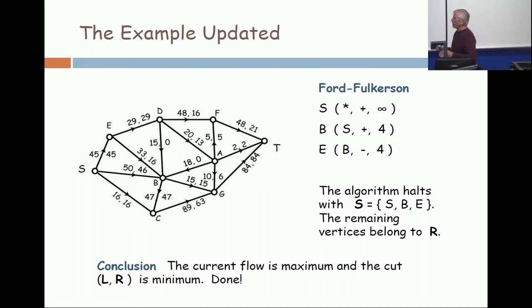Okay, now, let's identify the edges which go from labeled to unlabeled. I see one at the top, it's 29. The 15 and the 18 go backwards. Now, keep scanning down, see BG? That's positive, that's 15. BC is positive, that's 47. SC is positive, that's 16. Add up those numbers, what do you get? You should get 107.